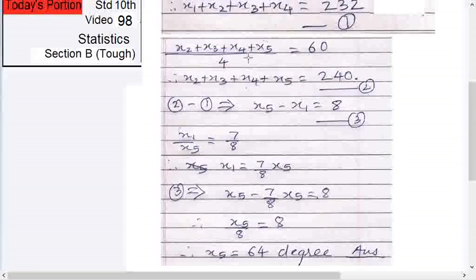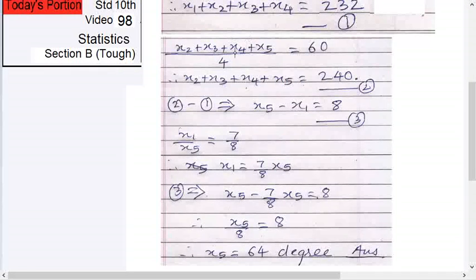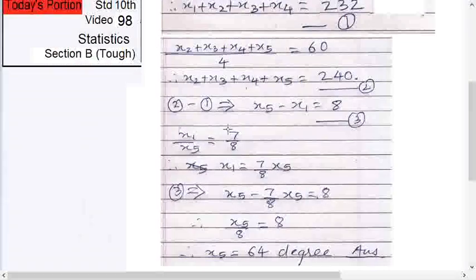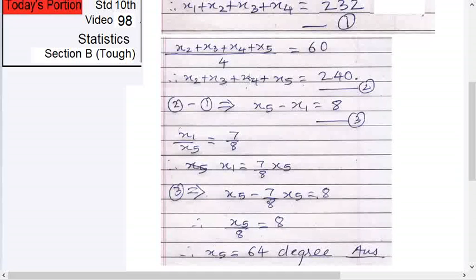Then X2 + X3 + X4 + X5 divided by 4 equals 60, right? This is given, 60. Therefore X2 + X3 + X4 + X5 equals 4 × 60 = 240. Give this as equation 2.